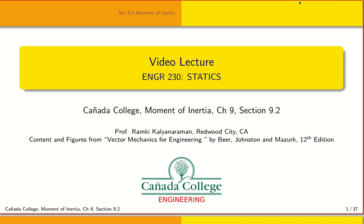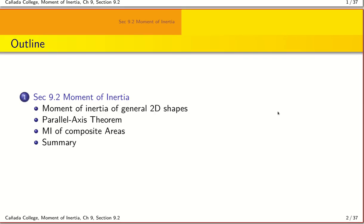This lecture continues our discussion about the moment of inertia, which we started in the last class. We completed section 9.1, which covered defining the moment of inertia and showing how to calculate it for a simple shape like a rectangle. Today we'll build off that, covering section 9.2, which allows us to calculate the moment of inertia about any given axis using the parallel axis theorem, and also how to deal with composite areas.